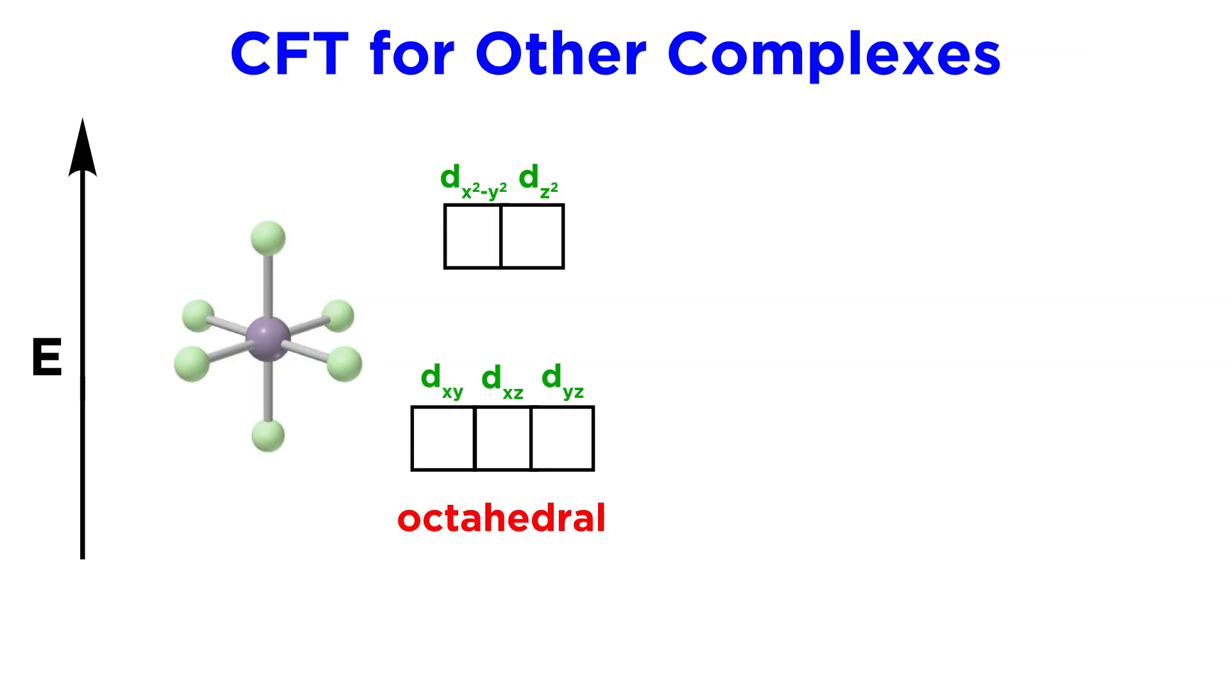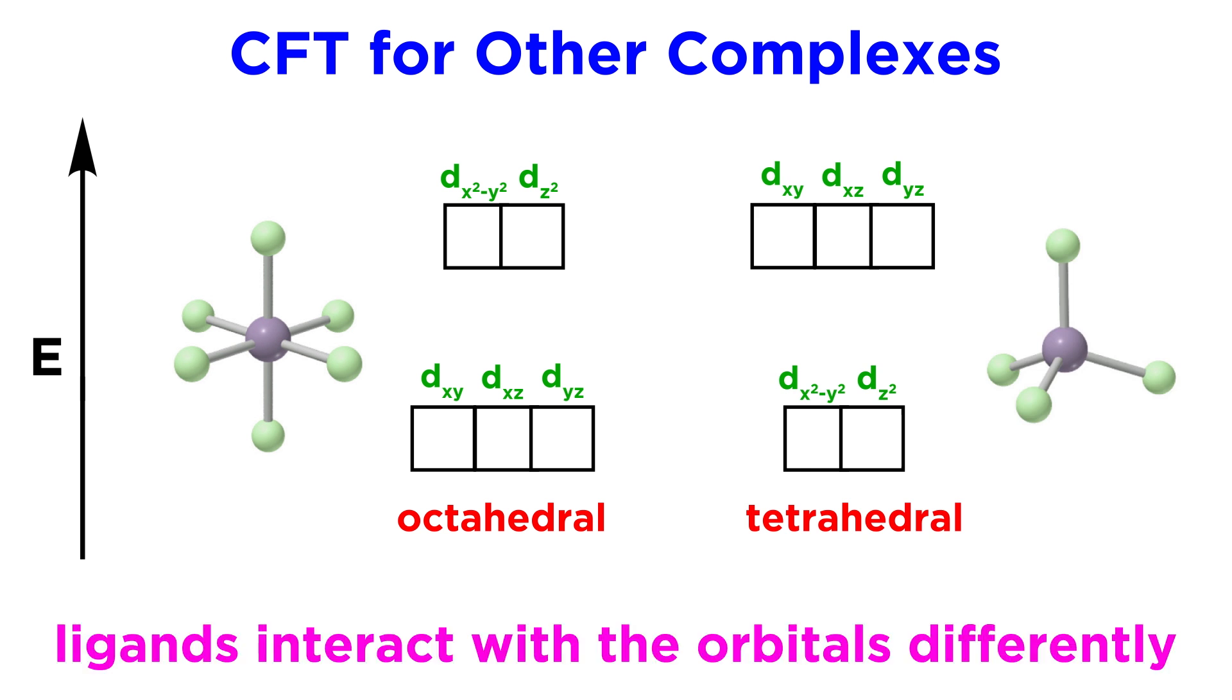Crystal field theory works for geometries other than octahedral as well, like tetrahedral, which tend to be high spin, but the ligands orient themselves differently, so they interact with the orbitals differently, and we get different energy diagrams.